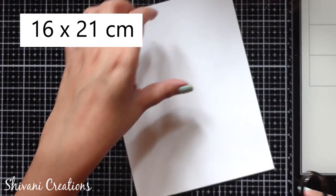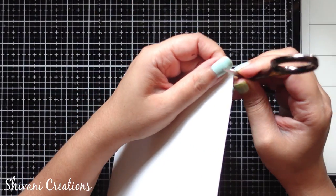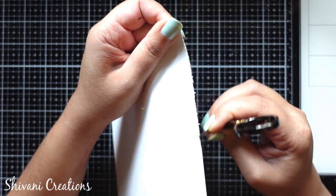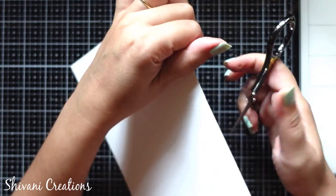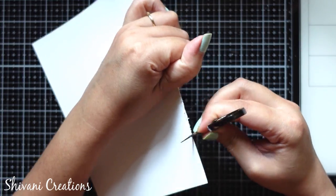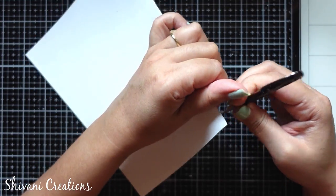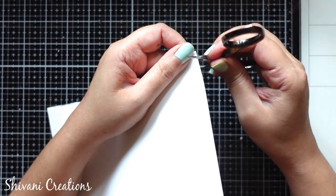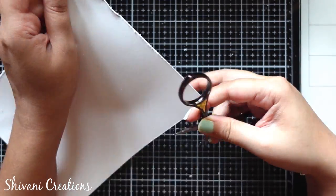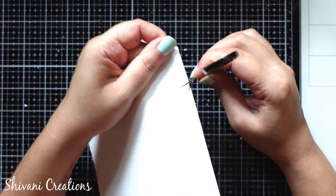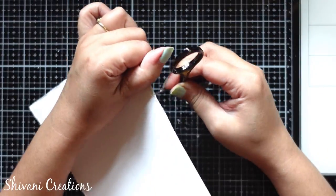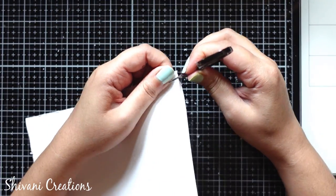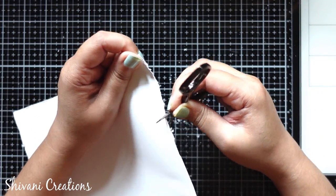Now taking one 16 by 21 cm 180 gsm white color paper and using the scissor I am just distressing the edge of this paper to give it nice shabby chic look.